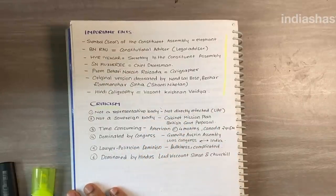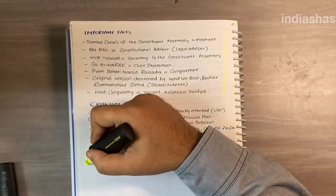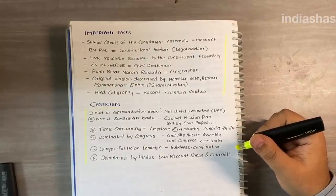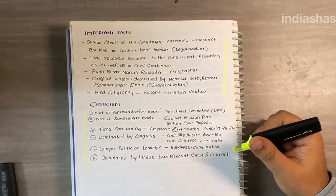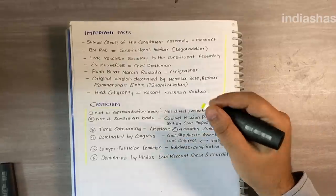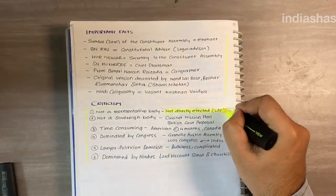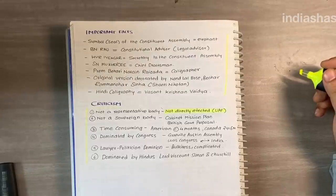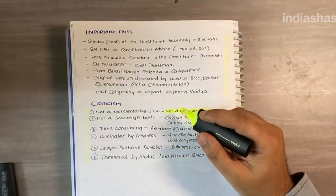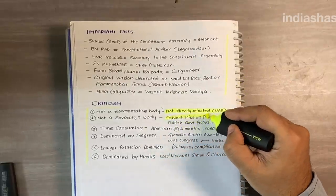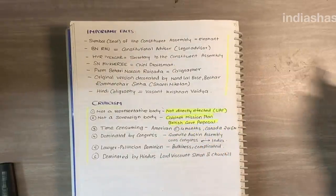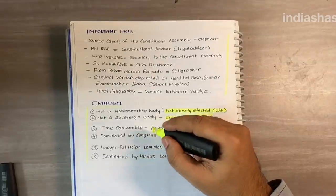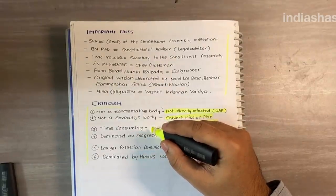The constituent assembly was criticized on various grounds, as mentioned in M. Laxmikanth. First, it was not a representative body, as it was not directly elected by universal adult franchise — not all adult members of India voted for the election of members. Second, it was not a sovereign body, as it was a creation of the British Parliament through the Cabinet Mission plan. Third, it was a time-consuming exercise; according to some critics, the constituent assembly took a long time to create the constitution, though the American constitution took only four months, while the Canadian constitution took two years and six months.